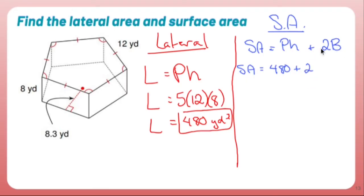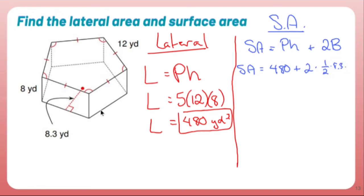Plus two times — now, this is a regular polygon. A regular polygon's area is found by doing one half times the apothem. And if you're like, apothem? No, that's not a possum. The apothem is 8.3. It's basically like the radius of a regular polygon. So one half times the apothem, which is 8.3, times the perimeter of the polygon, which is 12 times 5, which is 60.